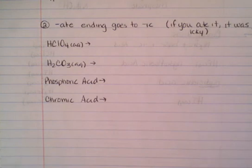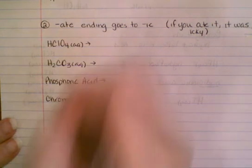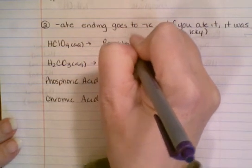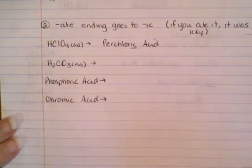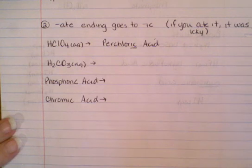Let's start with one like HClO4. CLO4 is perchlorate, so it's going to be perchloric acid. Now H2CO3—CO3 is carbonate, so the -ate has to go to -ic. This is going to be carbonic acid.